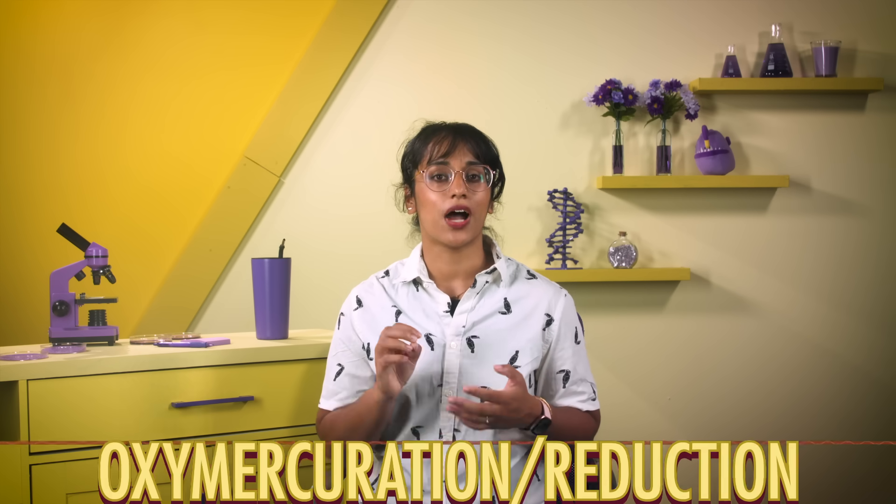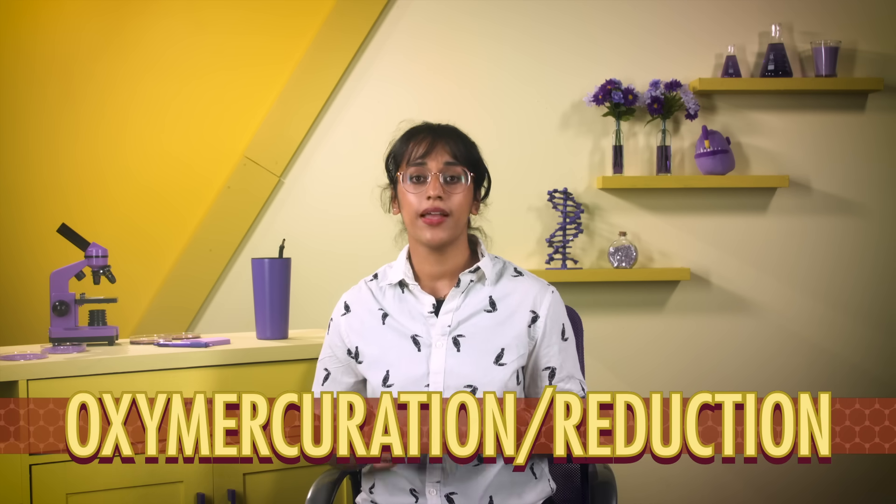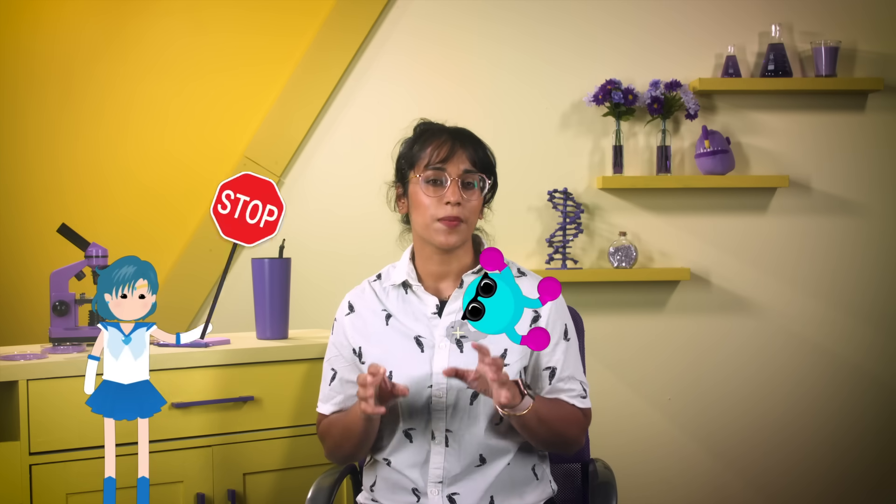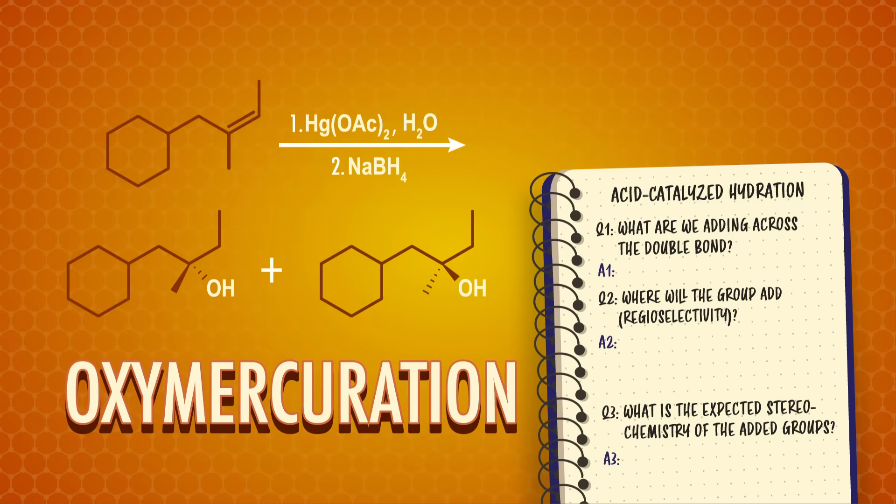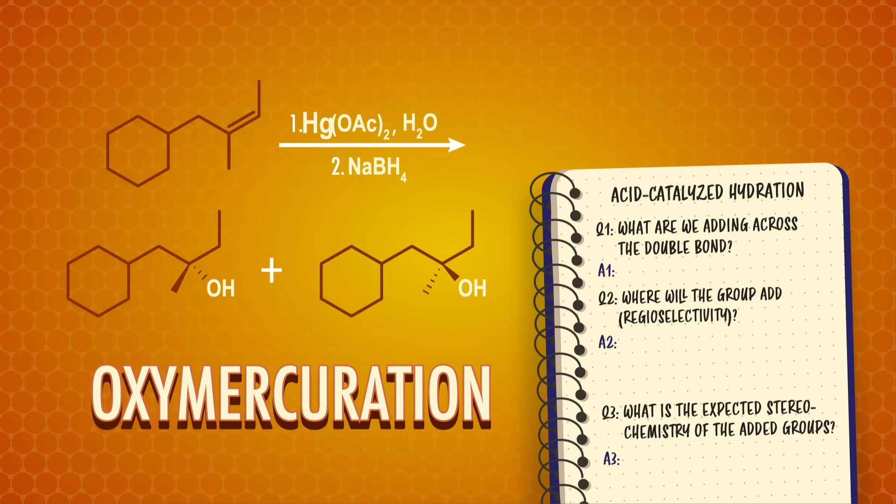To add a nucleophile like water without carbocation rearrangements, we can use a reaction called oxymercuration-reduction. To help remember this, think of mercury as a tiny red stop sign of a planet blocking shifty carbocations. The name oxymercuration means using a mercury atom to help add oxygen across the double bond. And the reduction part is how we get rid of the mercury atom after it's done its job.